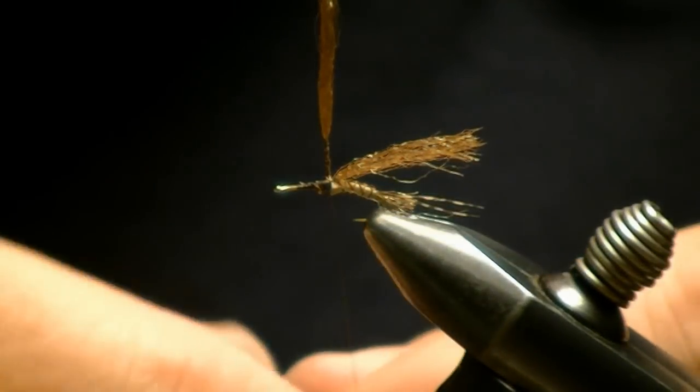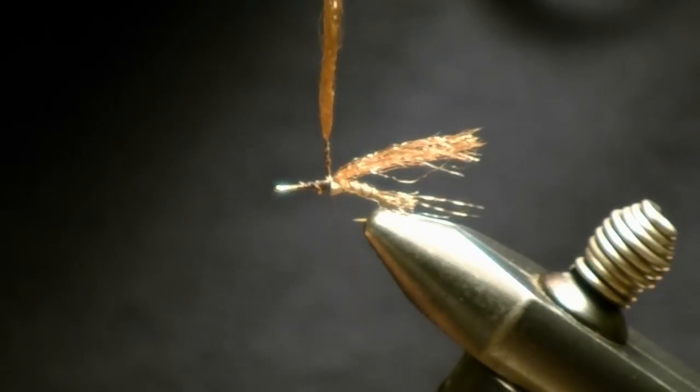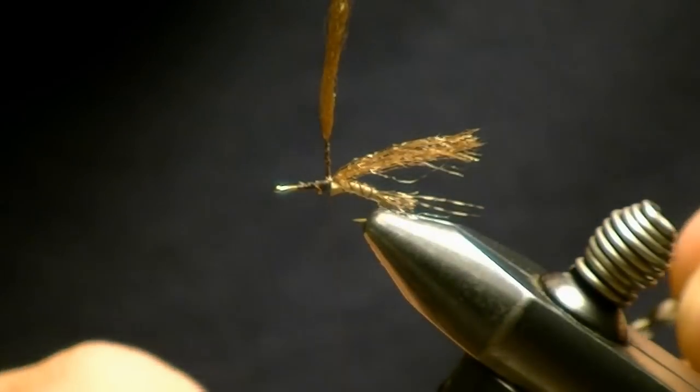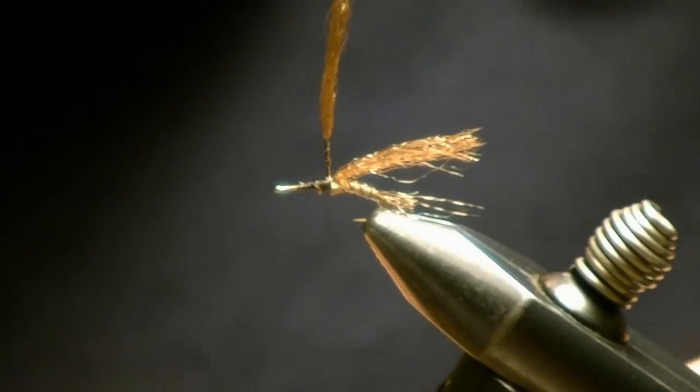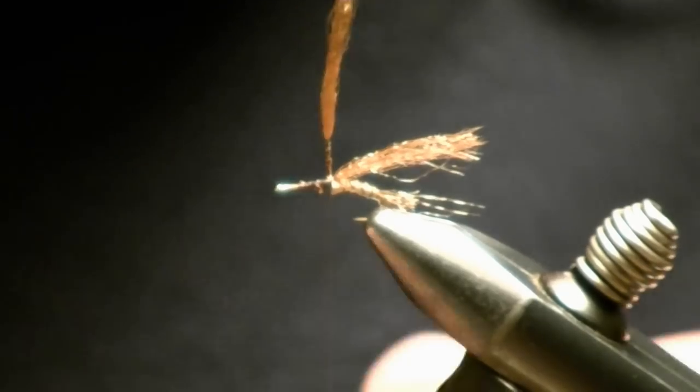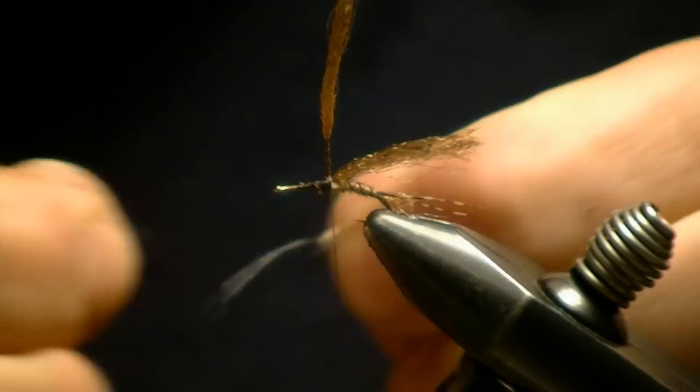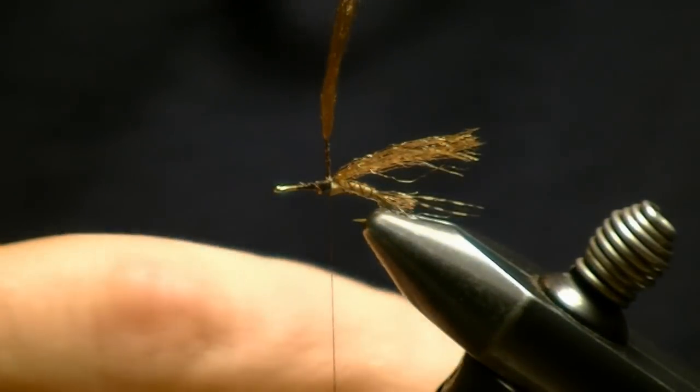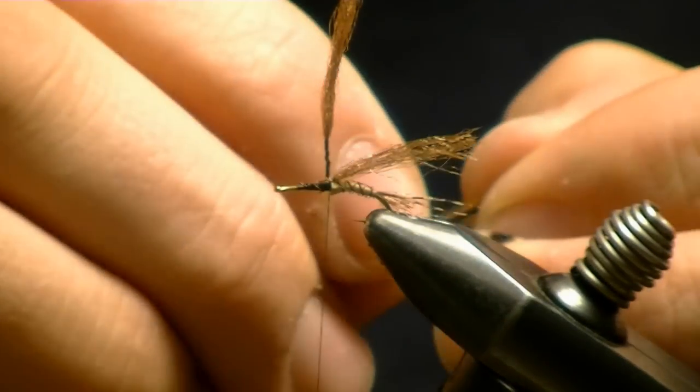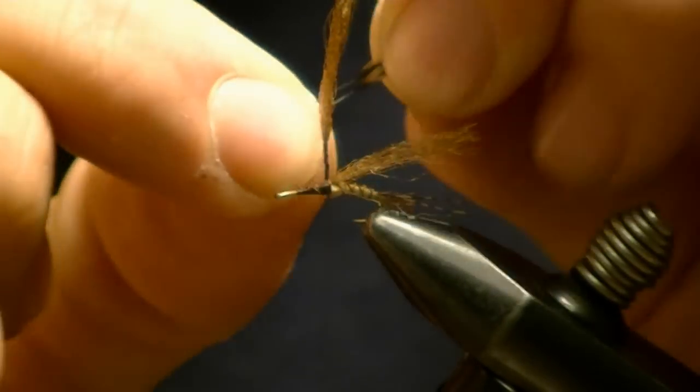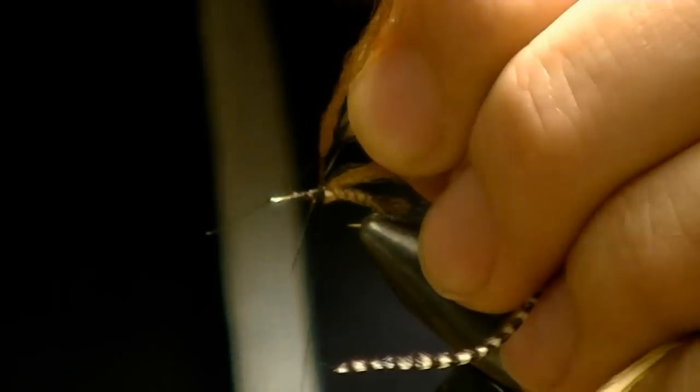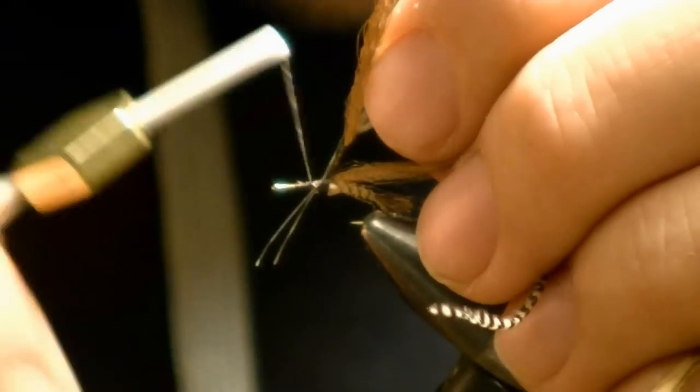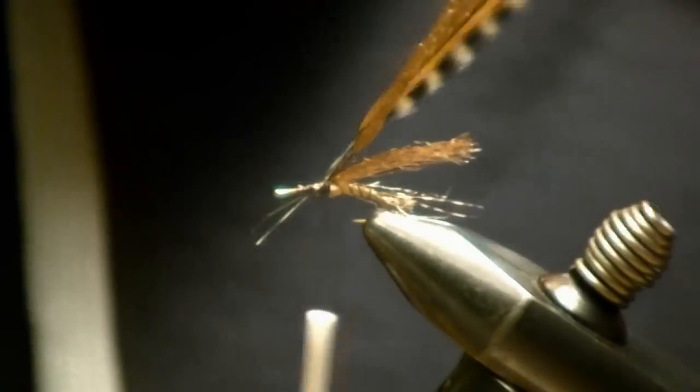I'm going to take one brown and one grizzly hackle. Strip out the stem quite a ways. Match them up. I'm going to even up the stems at the top of my post.